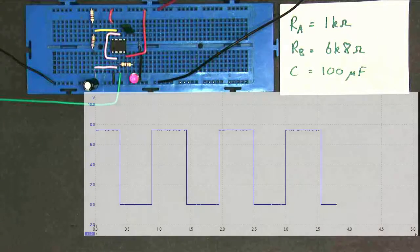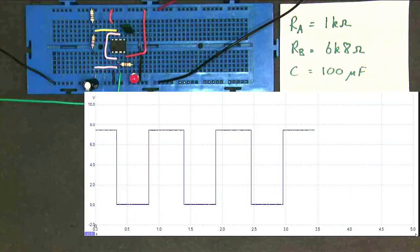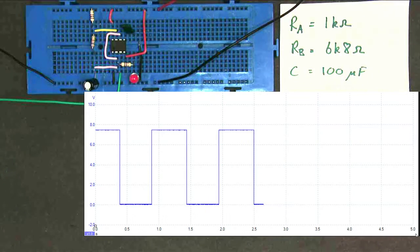Now the oscilloscope screen is showing the timing diagram for our A-Stable. And as you can see, the output is going on and off repeatedly. And the time period on the bottom axis is around about one second.